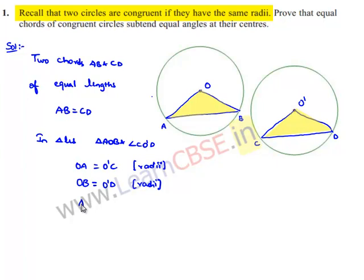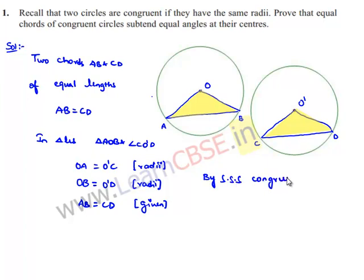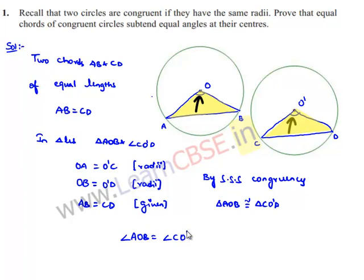Also, it is initially given that the chords are of equal length. Therefore, AB is equal to CD. By the SSS property of congruency, we can say both triangles are congruent — that is, triangle AOB is congruent to triangle CO'D. When two triangles are congruent, their corresponding angles are equal. Therefore, angle AOB is equal to angle CO'D.